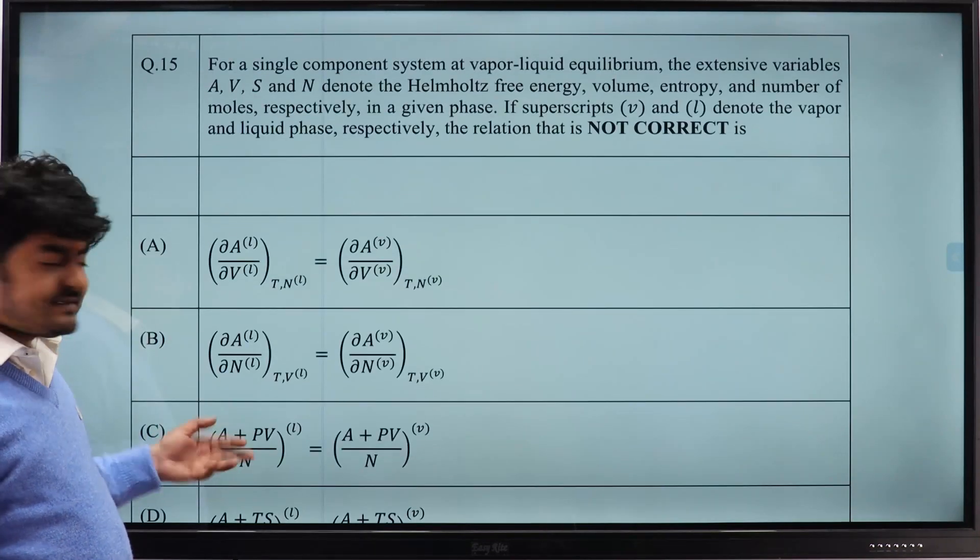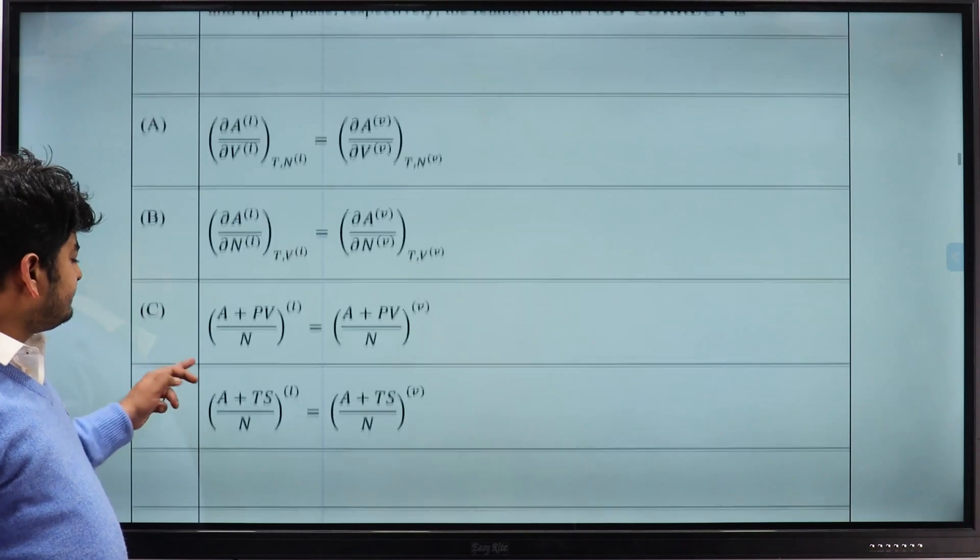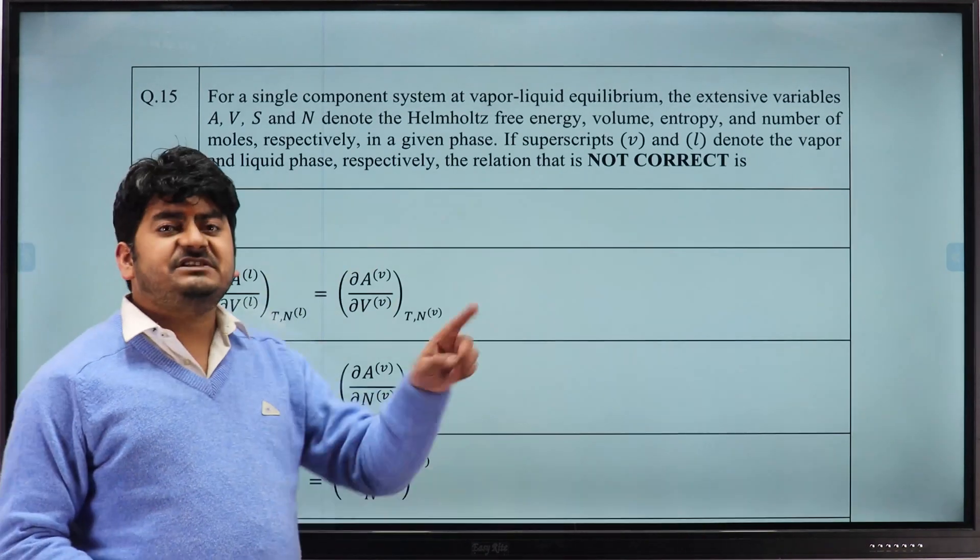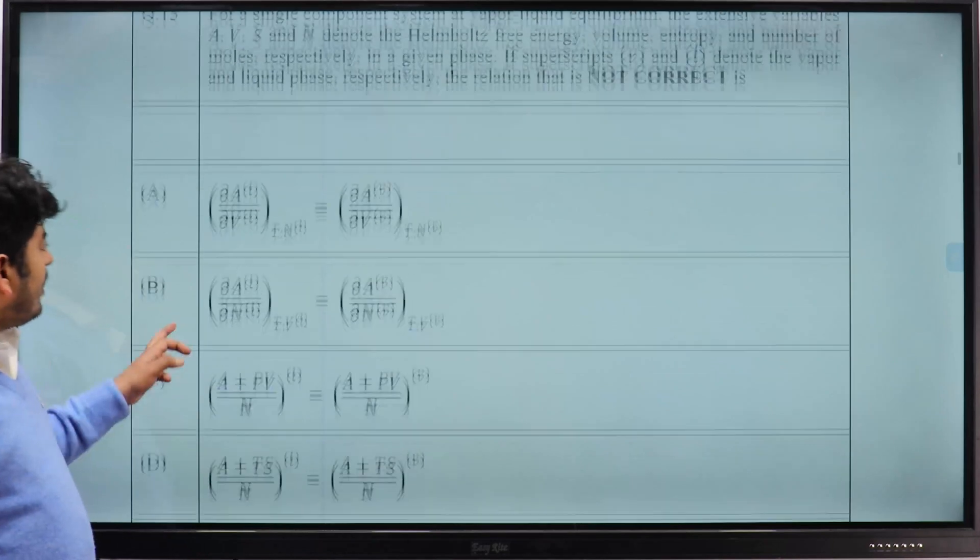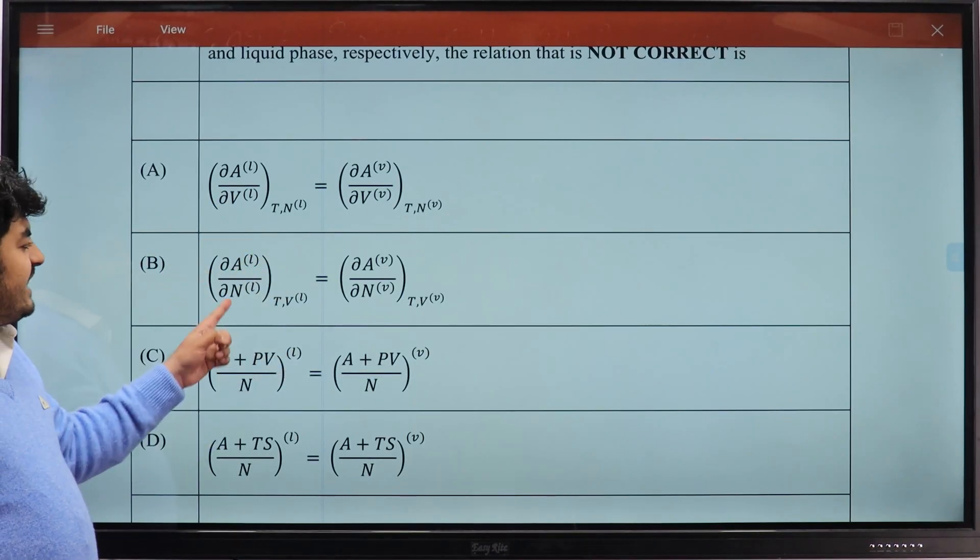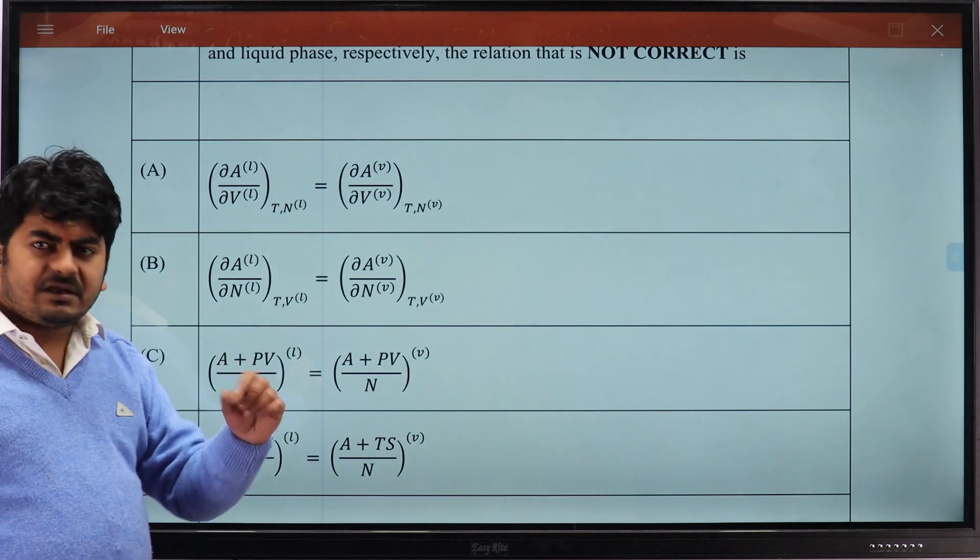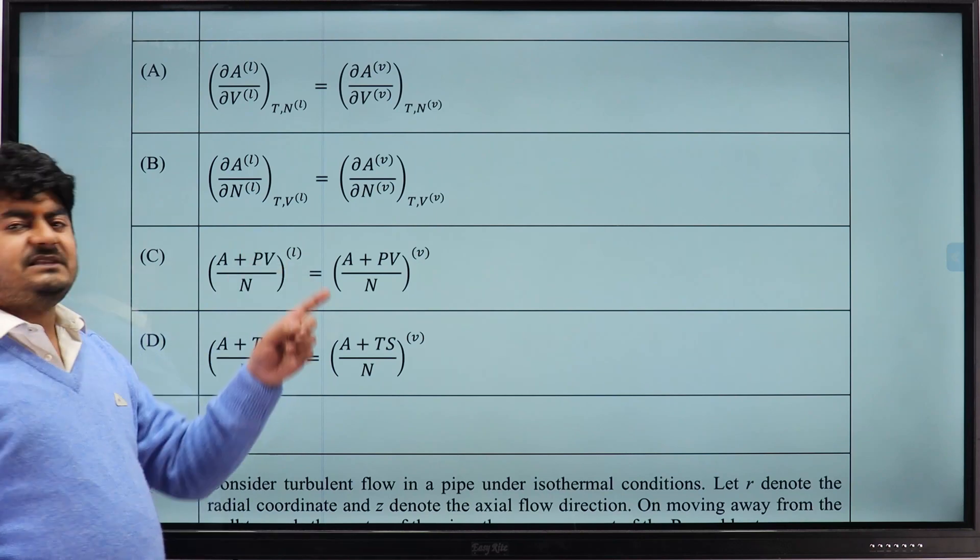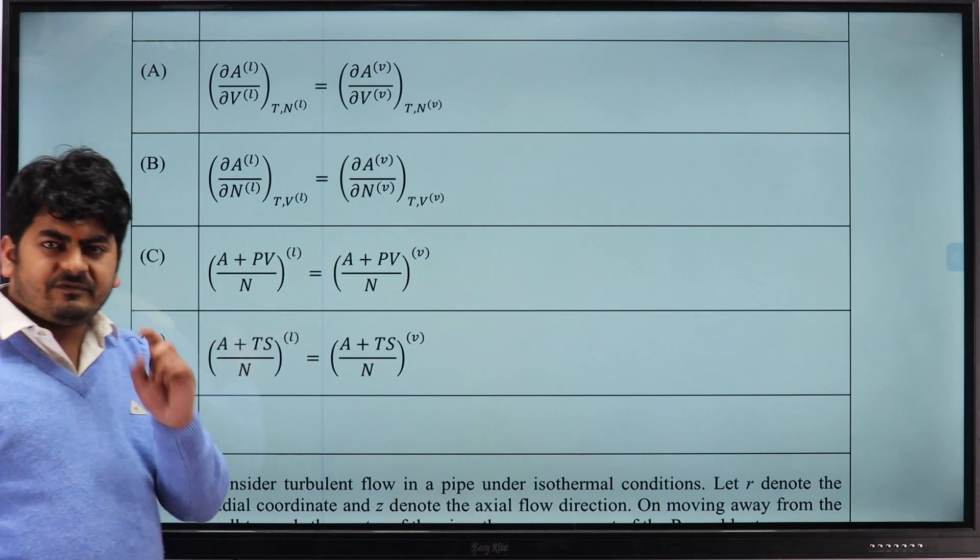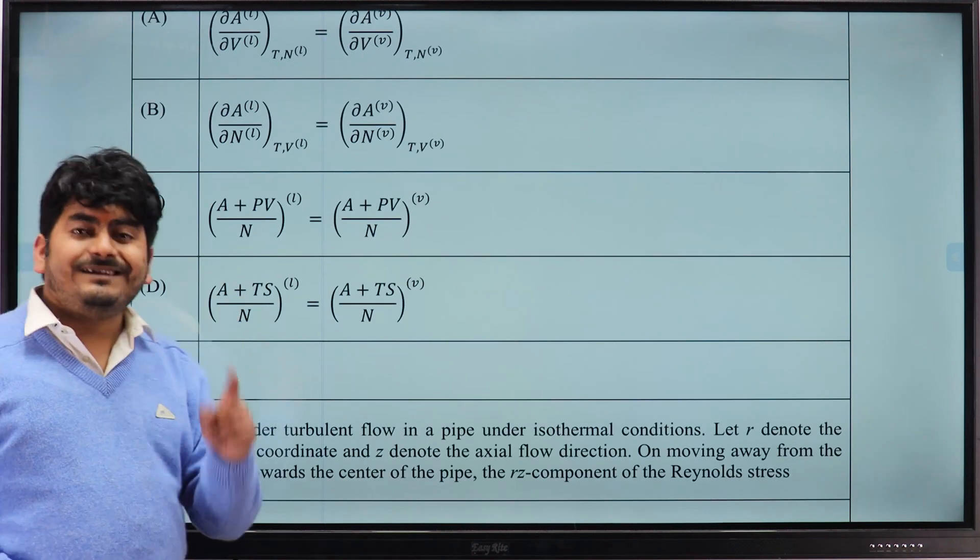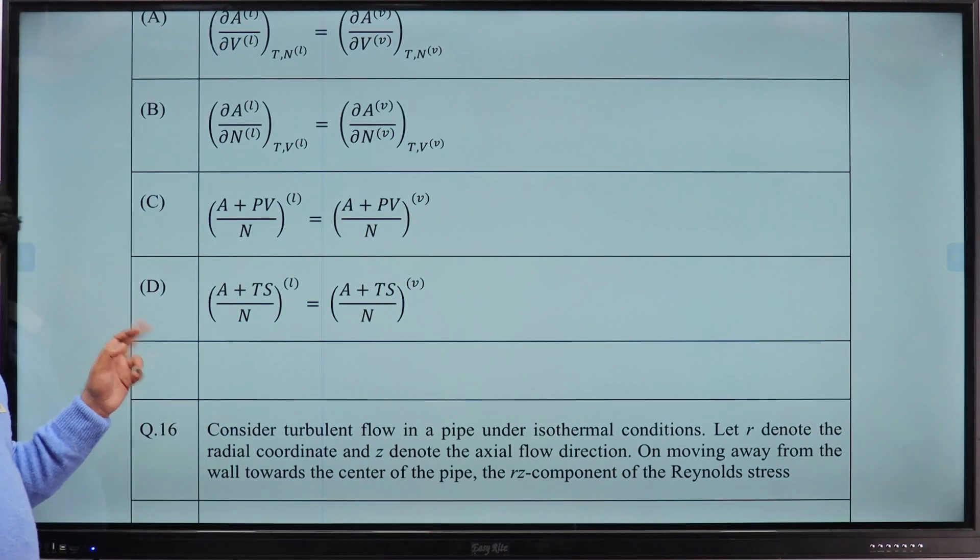This question from thermodynamics, vapor-liquid equilibrium. The correct answer is, they are asking out of these four options which is not correct. Del A over del B at constant temperature is pressure, del A over del n at constant temperature and volume is chemical potential, A plus B times B upon n gives energy. All these three are equal in liquid and vapor at equilibrium, but A plus TS upon n is the internal energy which is not equal, so option D is not correct. We will choose option D as the answer.